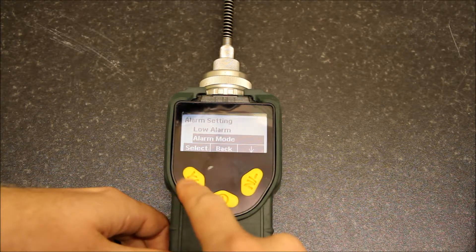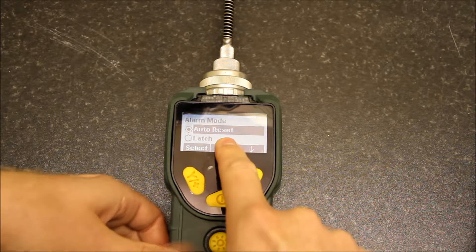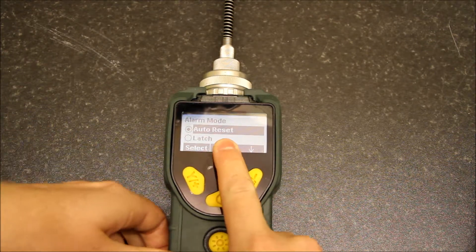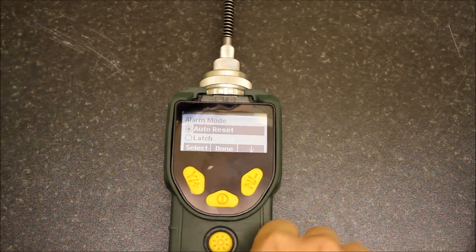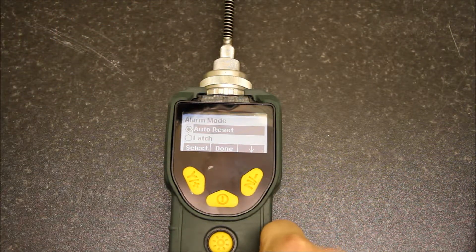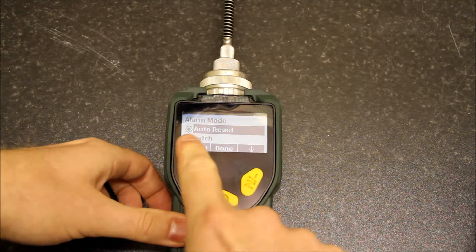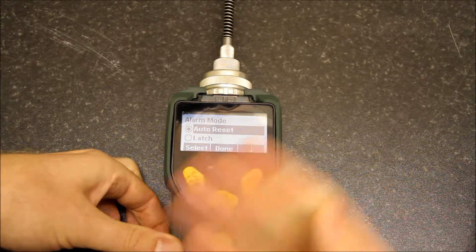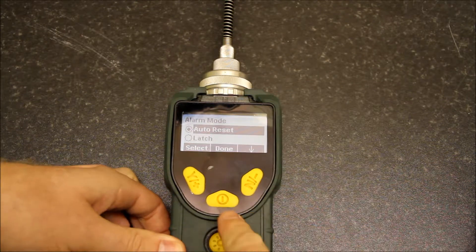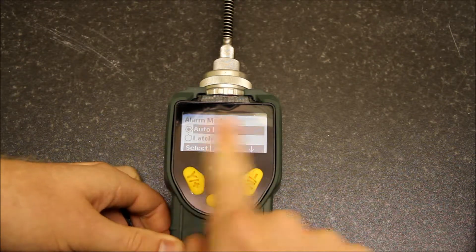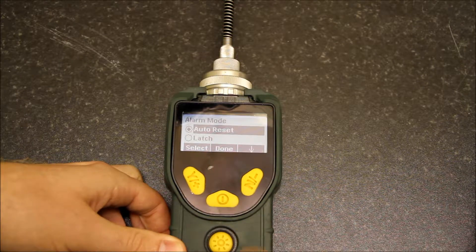You can go to alarm mode here. You've got auto reset, which is where the unit goes into alarm when it detects a sufficiently high level, then clears down automatically. You've got latching, which means when it drops into alarm you have to press a button to drop back out. Mine's in auto reset.